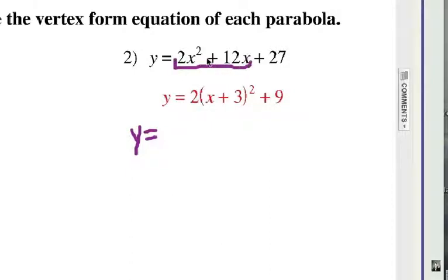You look at just the 2x terms and see if there's a GCF. In this case, it's a 2. So, factor out a 2 and get x squared plus 6x. Leave room for that third term, and separate out the 27, and just kind of push it off to the side.